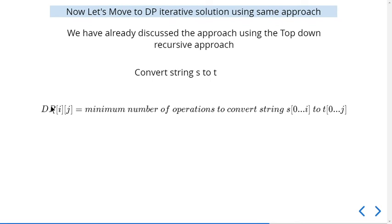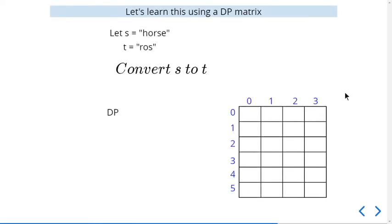Now let's move towards the iterative solution. In the iterative DP approach, dp[i][j] stores the minimum number of operations to convert the first i characters of string1 to the first j characters of string2. We'll use the example of converting horse to ros to visually understand how to fill this DP table.